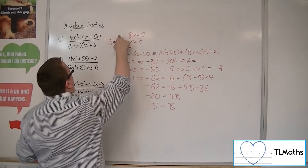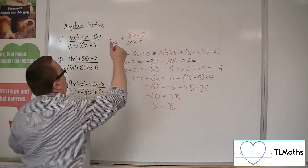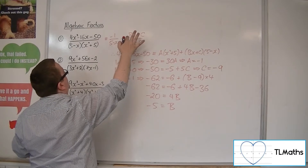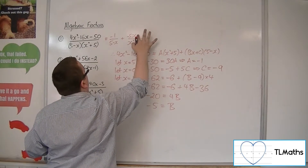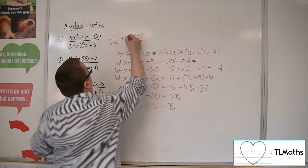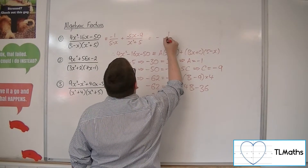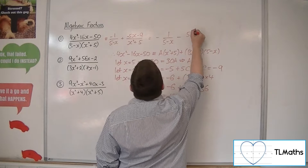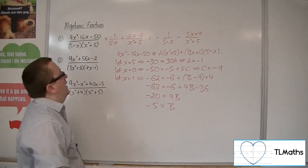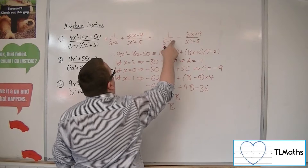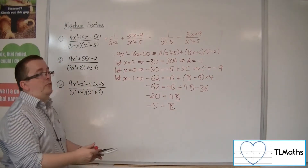So we can write the result as: (4x squared minus 16x minus 50) over (5 minus x)(x squared plus 5) equals minus 1 over (5 minus x) plus (minus 5x minus 9) over (x squared plus 5), which simplifies to minus 1 over (5 minus x) minus (5x plus 9) over (x squared plus 5). Equivalently: 1 over (x minus 5) minus (5x plus 9) over (x squared plus 5). That's number 1.